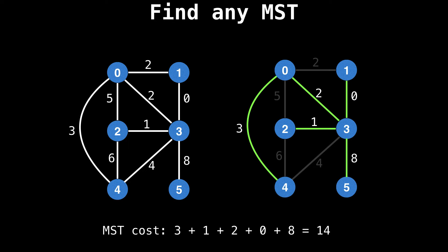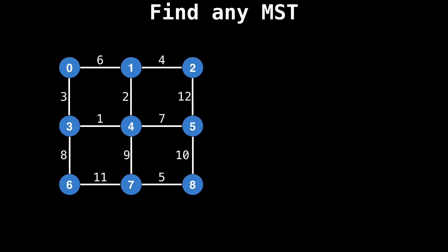So one possible minimum spanning tree is the following with a cost of 14. Again, minimum spanning trees are not unique, so there could be another valid minimum spanning tree here, but they'll all have a cost of 14.